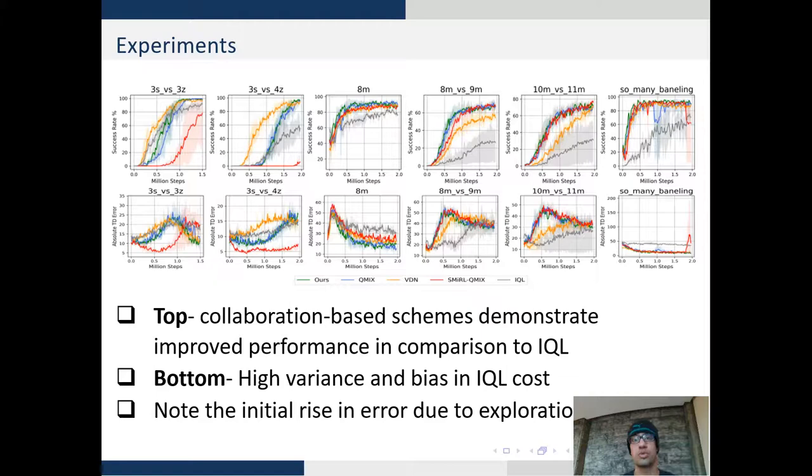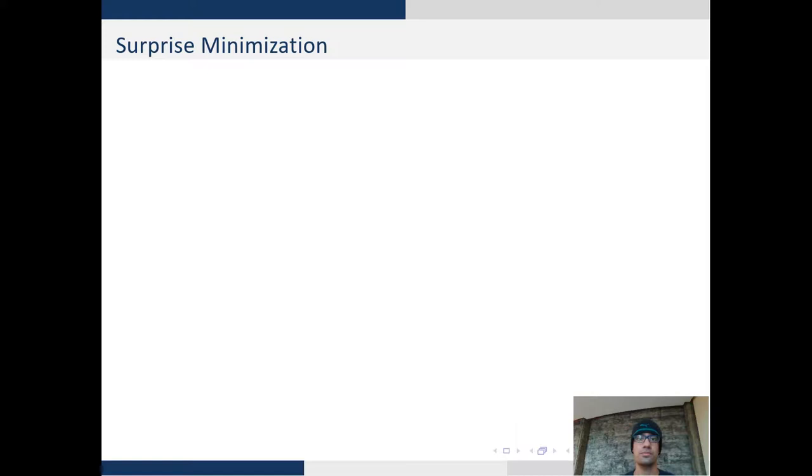Another notable finding is that collaboration-based agents do better in comparison to independent Q-learning, hence proving that collaboration is essential for achieving complex tasks. Secondly, high variance in IQL estimates prevent them from optimizing their cost concurrently and obtaining convergence at test time.